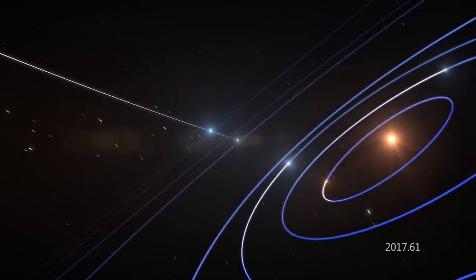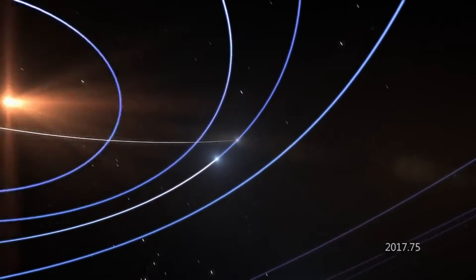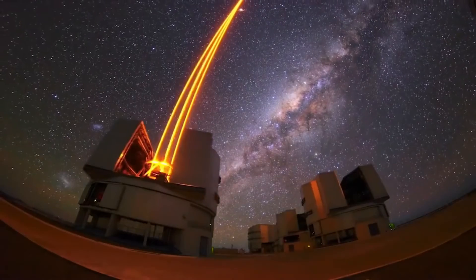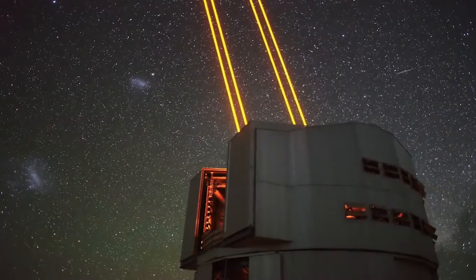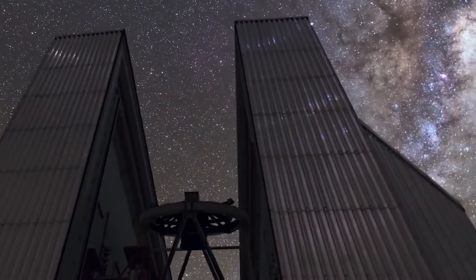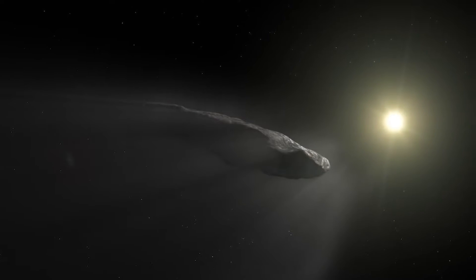This was no ordinary space rock. Or was it? To answer that, we will have to travel to their home to find out where these interstellar travelers came from. The first traveler, named Oumuamua, arrived on the scene from the star system of Vega.